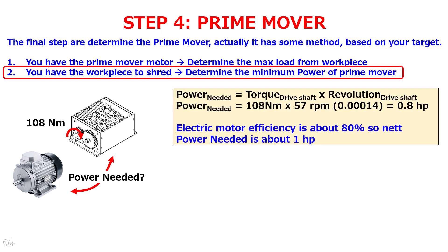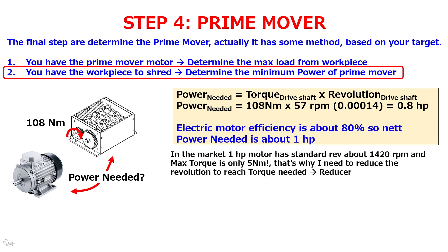The power needed is based on total torque and revolution. In this case I need about 0.8 horsepower. With electric motor efficiency of about 80%, the net power needed is about 1 horsepower. In the market, a 1 HP motor has a standard revolution of about 1420 RPM and a max torque of only 5 newton-meters. That's why I need to reduce the revolution to reach the required torque — meaning I need a reducer.